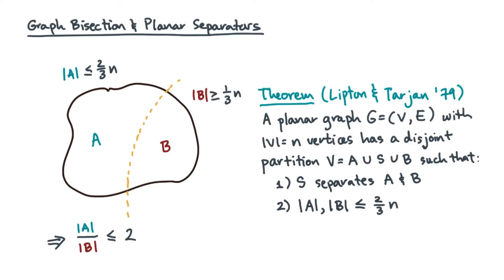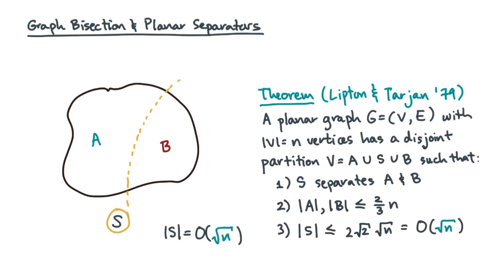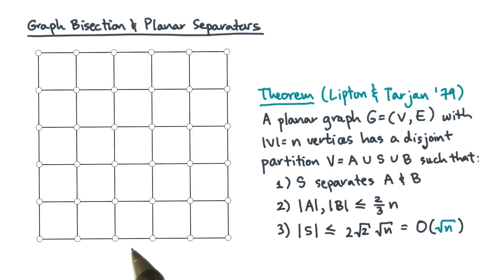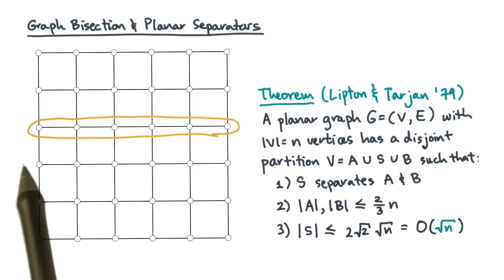The third property is the neatest. It says that the size of the vertex separator is about square root of n. For the grid or lattice graph, this result should make intuitive sense. A natural separator for this grid graph would be, say, some row or some column of vertices. Such a row or column would, of course, be root n in size.